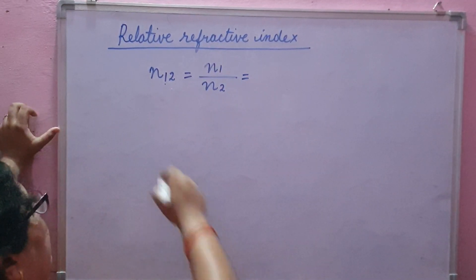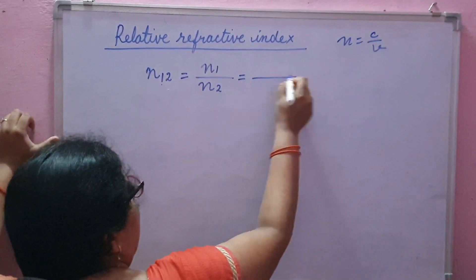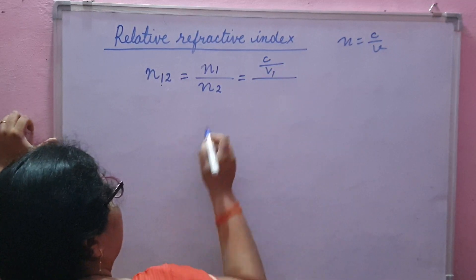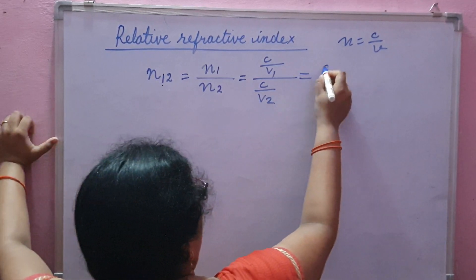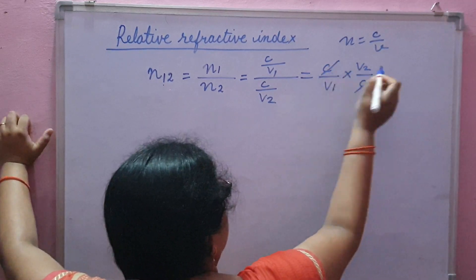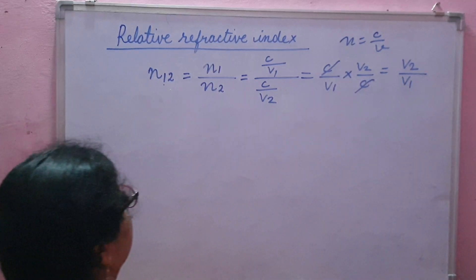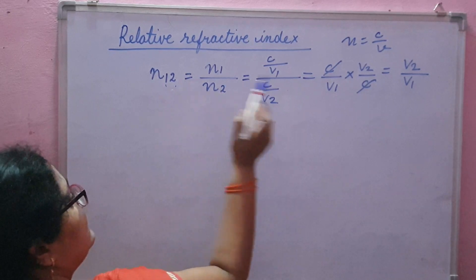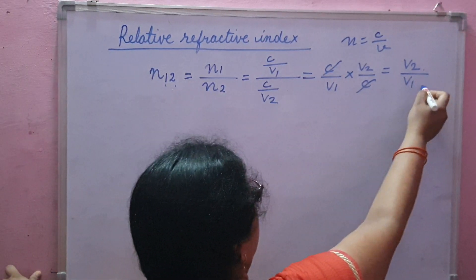We know that refractive index N is equal to C by V. So here N1 can be written as C by V1 and N2 can be written as C by V2. So C by V1 into V2 by C — the C's cancel — giving us V2 upon V1. So the refractive index of medium 1 with respect to medium 2 is equal to the speed of light in medium 2 to the speed of light in medium 1.